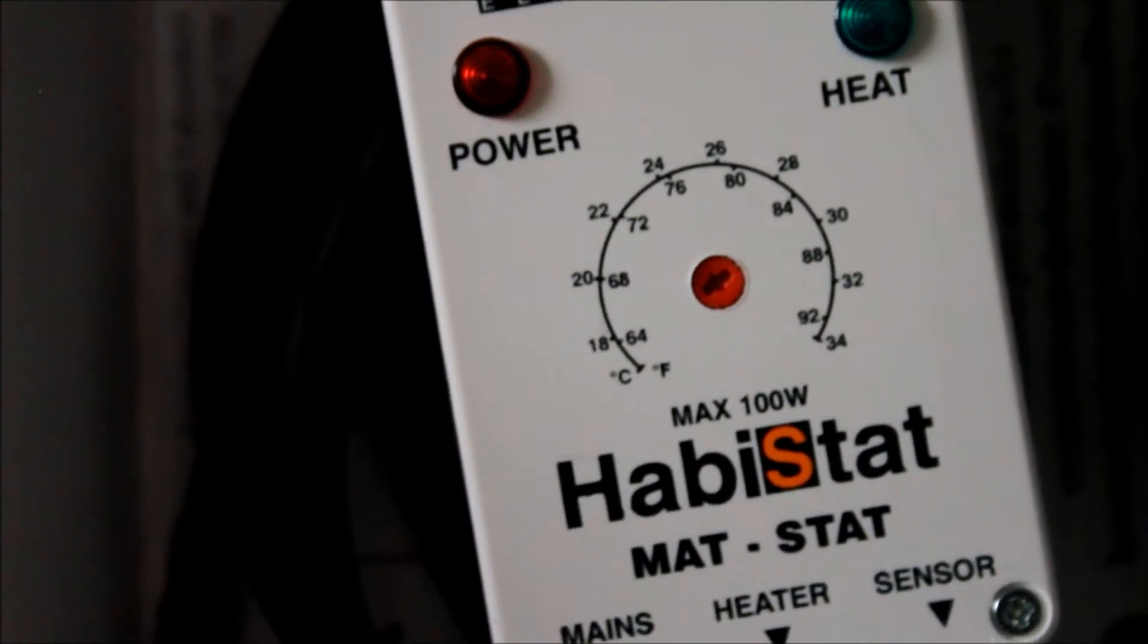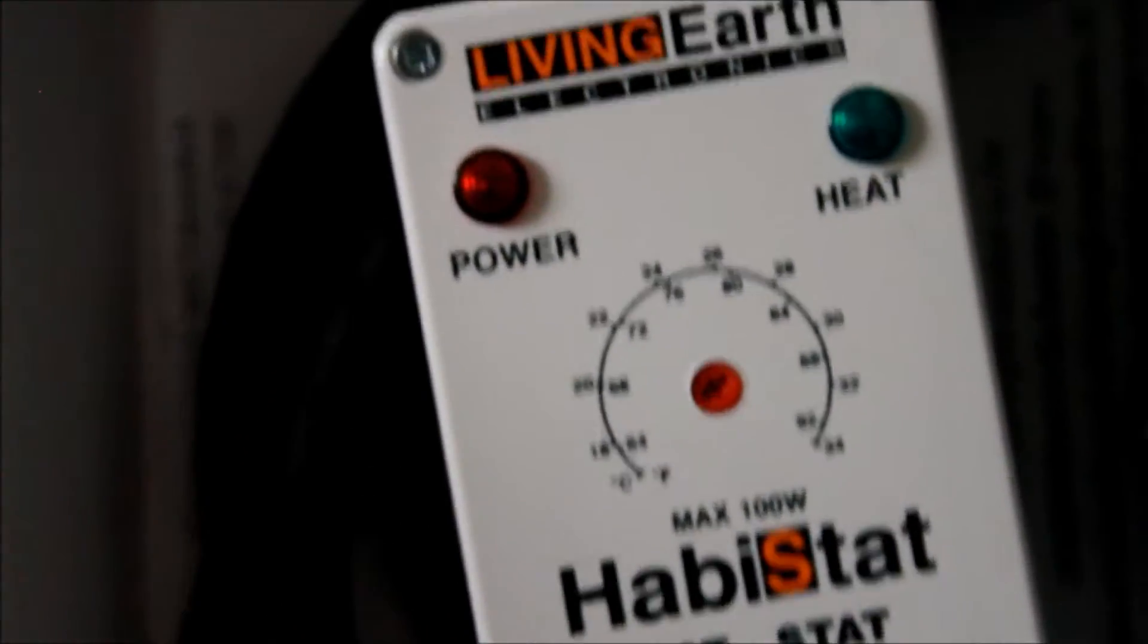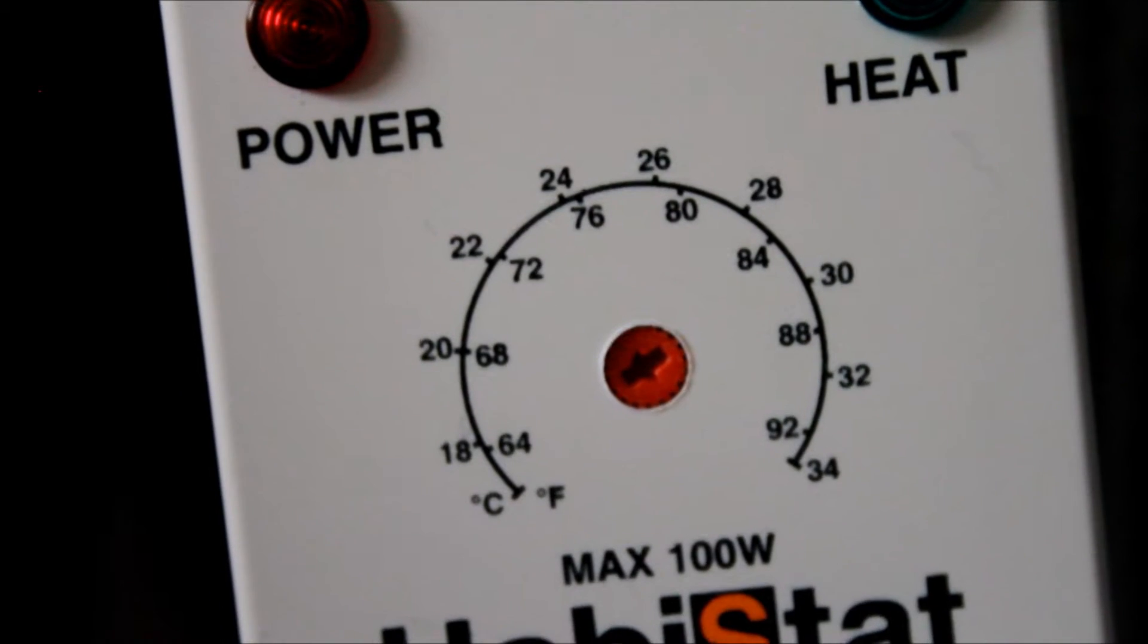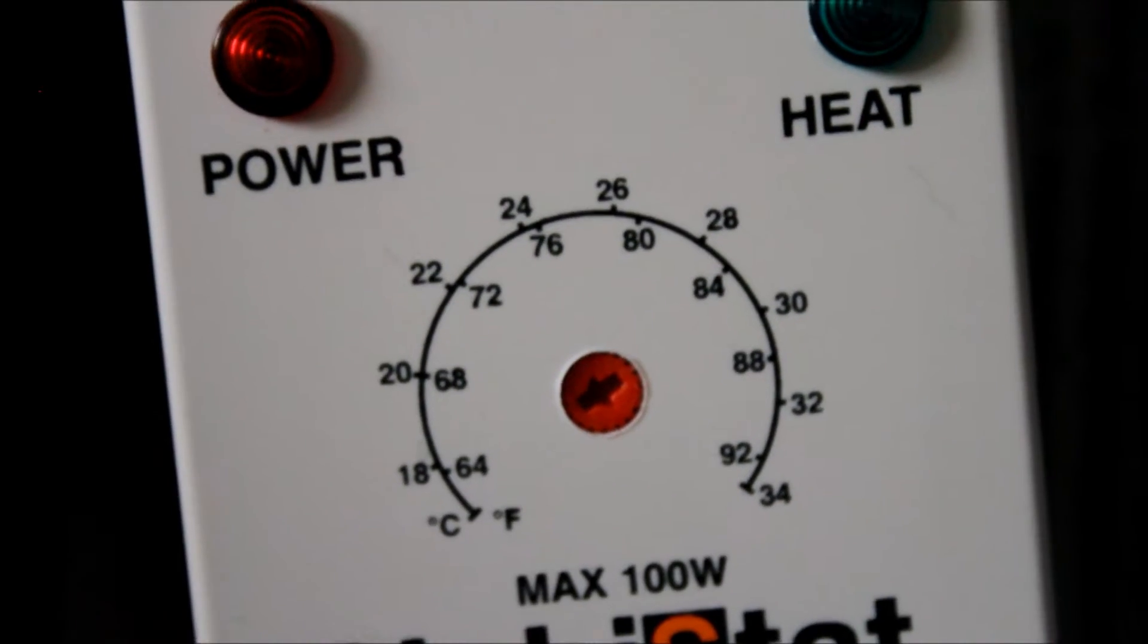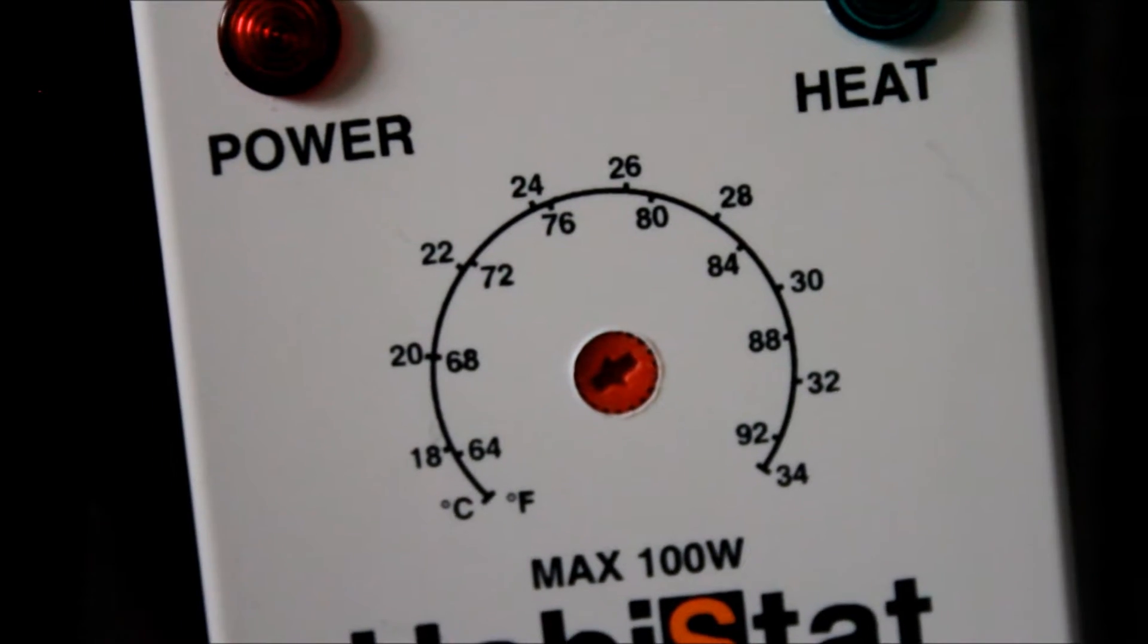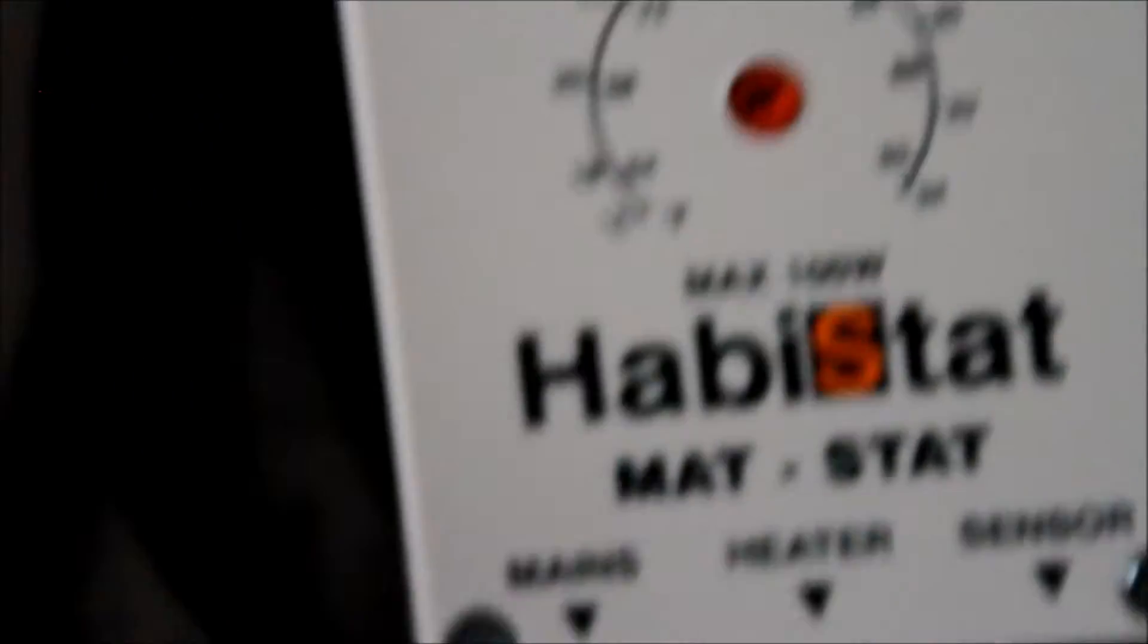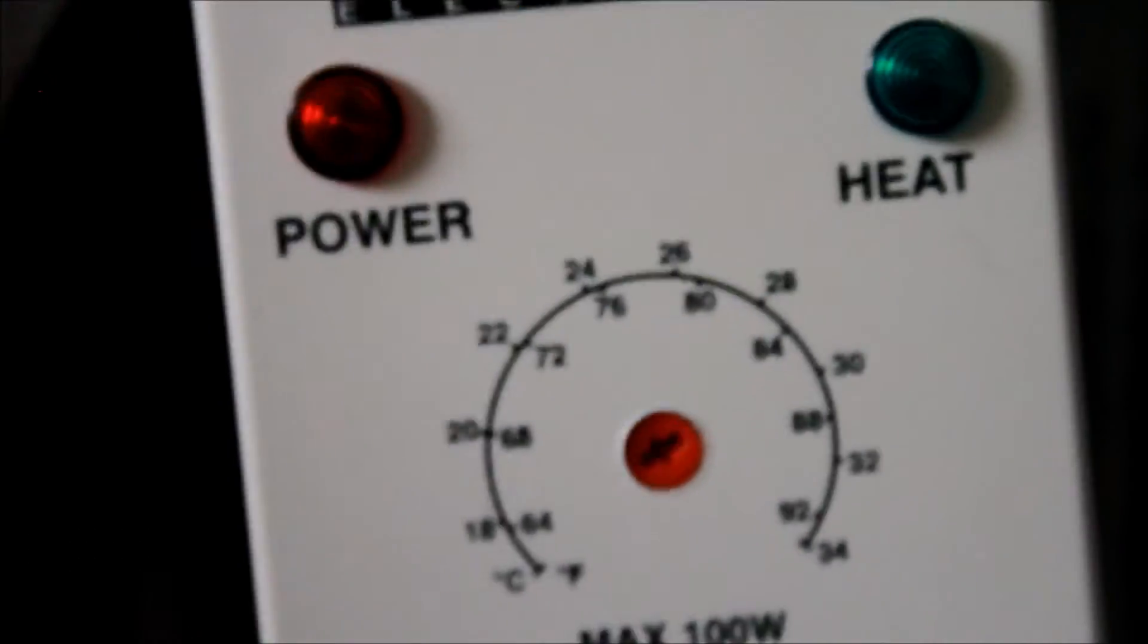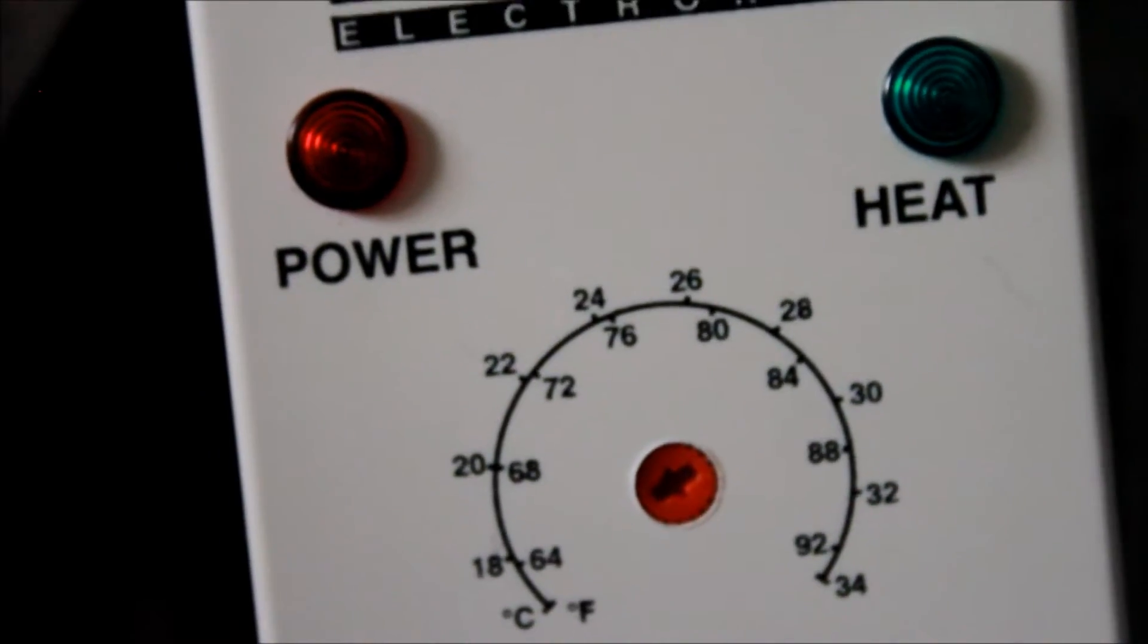Geckos usually have to be 25 to 32 degrees Celsius, which is 77 to 90 degrees Fahrenheit. So if you're using a thermostat, that's definitely more helpful in the winter.